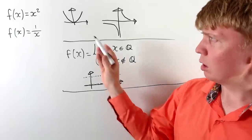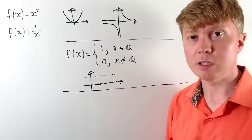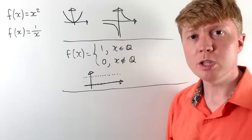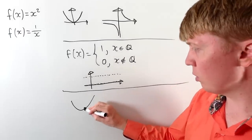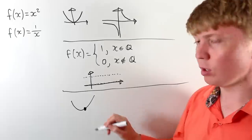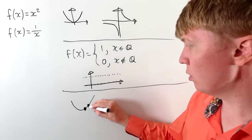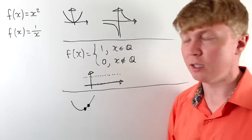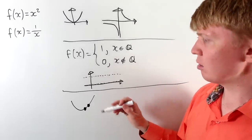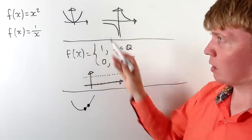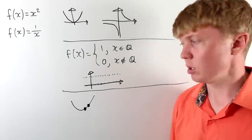Going back to our continuous example, instead of focusing on drawing without lifting the pen, we think of it as: if we zoom in on our graph at some input x, and make a very small change to that input, we should only see quite a small change to our output. You can see this works for y equals x squared — move along a tiny bit and you only get a tiny change in the output, because the graph is all joined together.